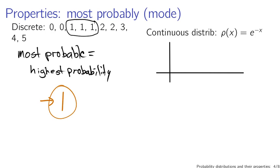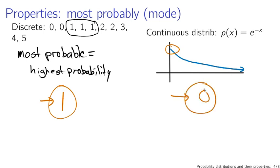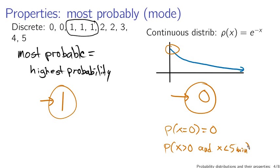In the case of a continuous distribution, it's slightly more complicated. If I plot the probability distribution — the exponential — the most probable value is actually going to be 0. You might think: what are the odds that Comcast puts me on hold for 0 minutes? Well, the rule is that the probability that x is exactly equal to 0 is 0. It only makes sense to say the probability that x is greater than 0 and less than, say, 5 minutes. But the peak of the distribution — the most probable value — is indeed 0 here, in spite of the fact that 0 will effectively never happen.